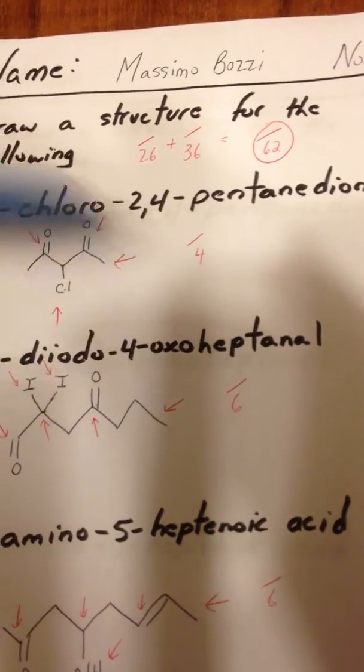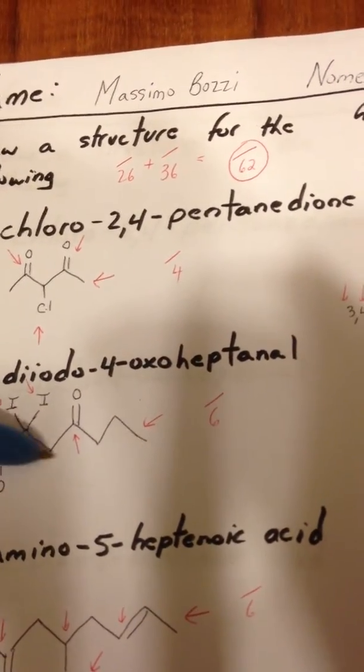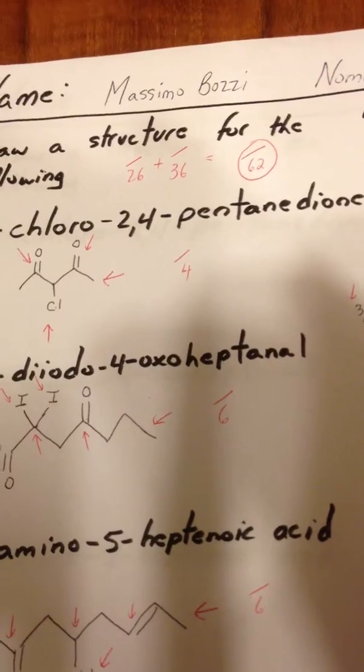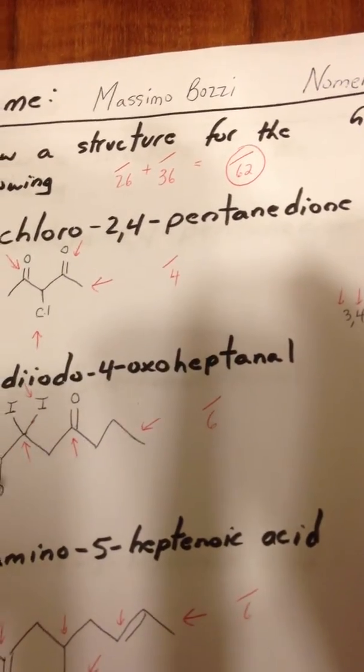And it gets the oxo designation at the fourth position, and the chain is 7 carbons long, so it's heptanal. It's named as an aldehyde. The aldehyde substituent is the highest priority on the molecule.